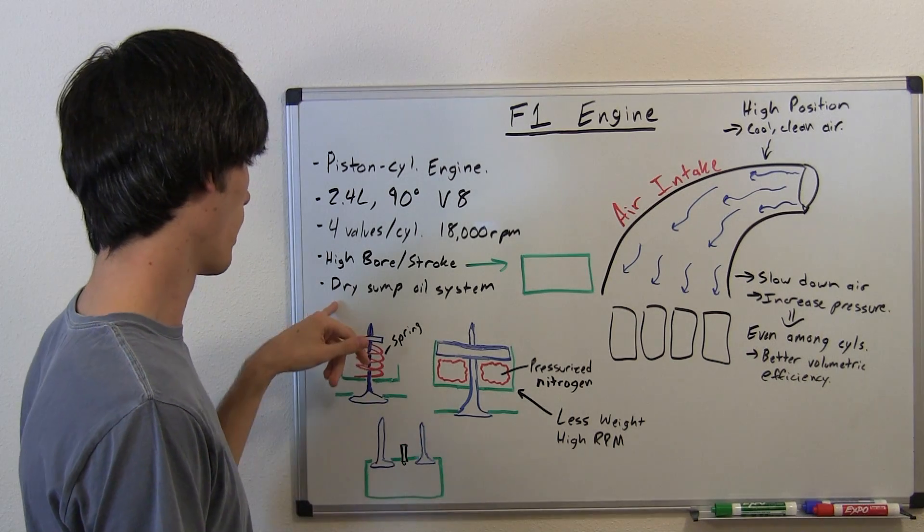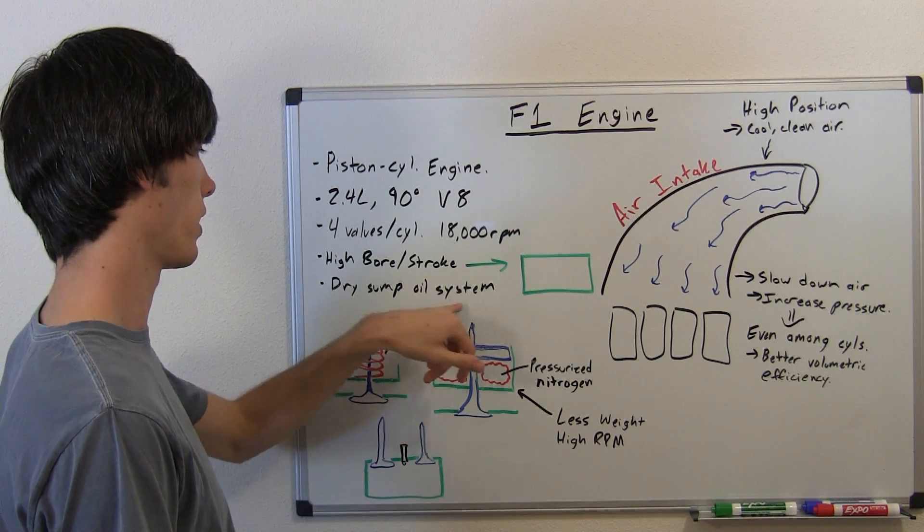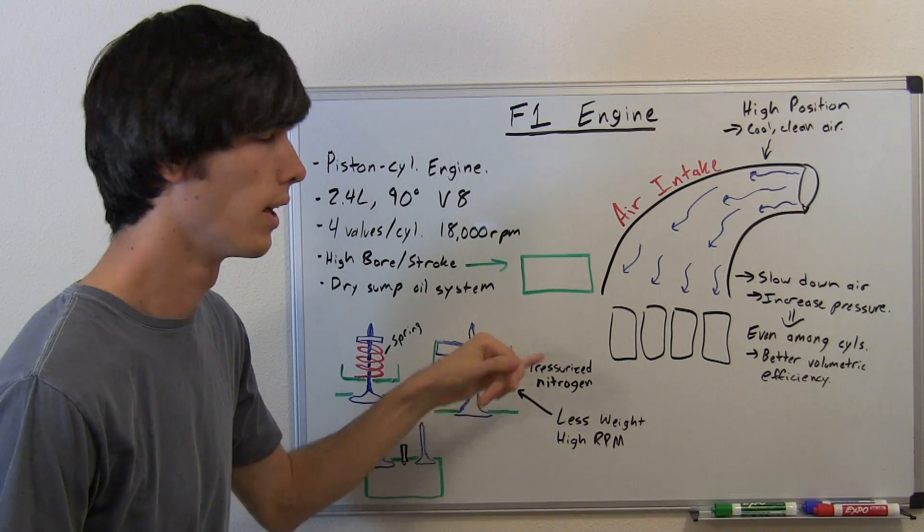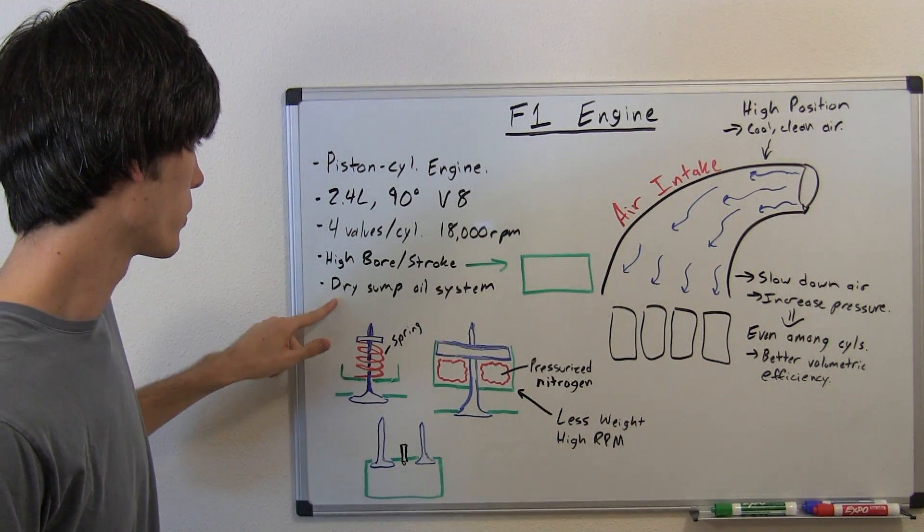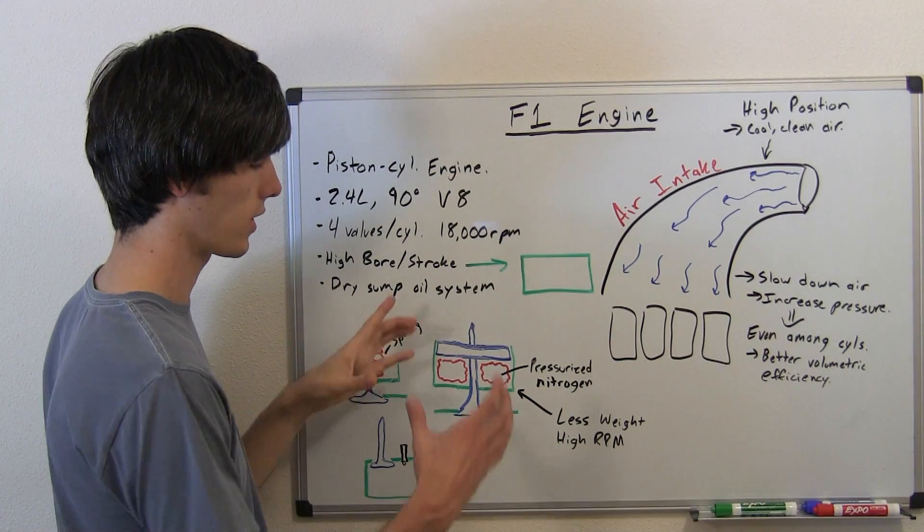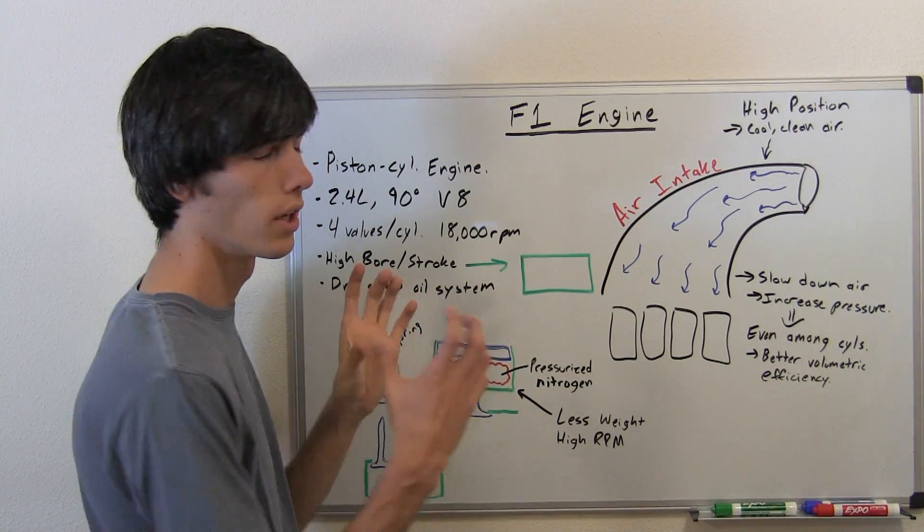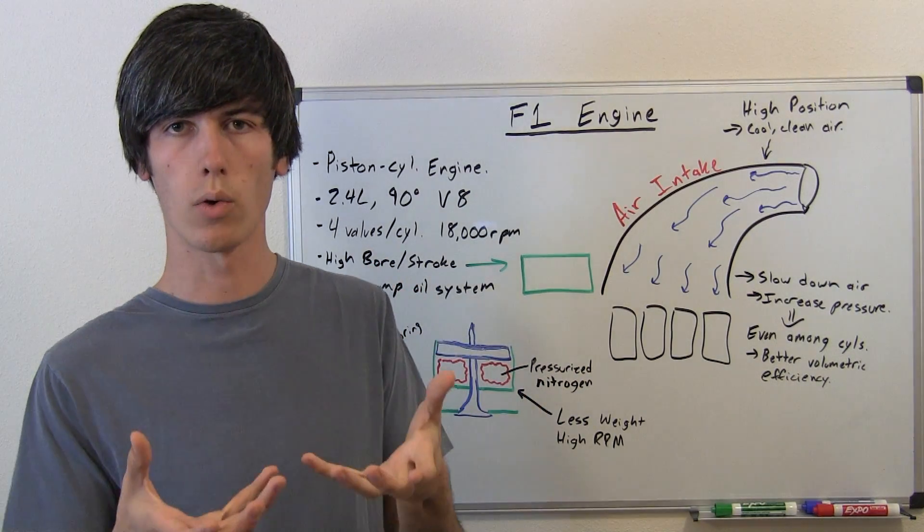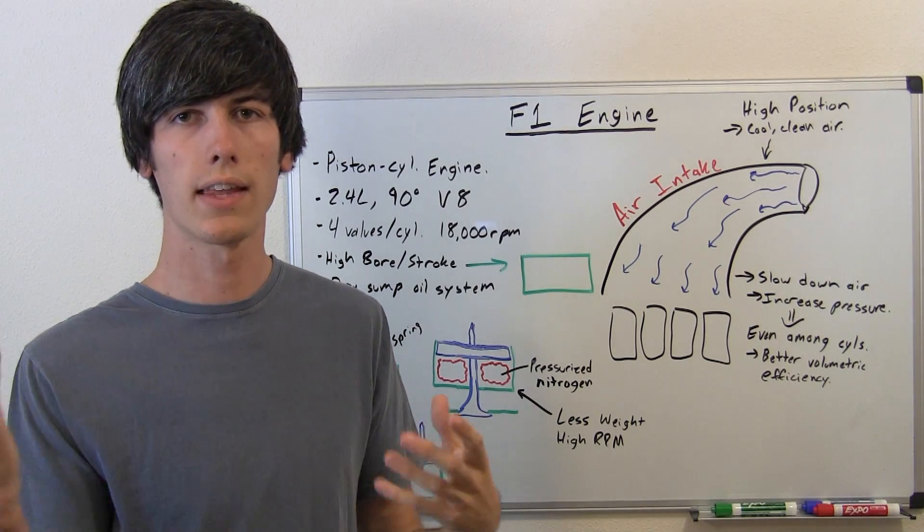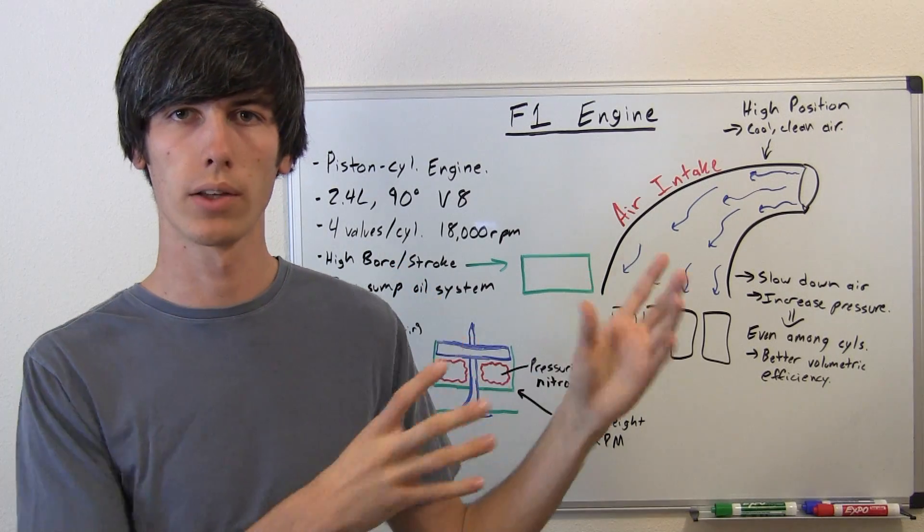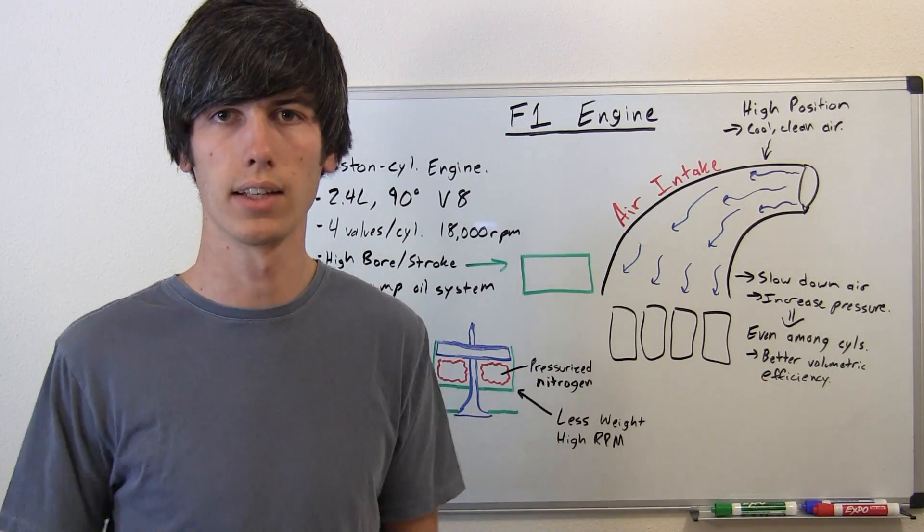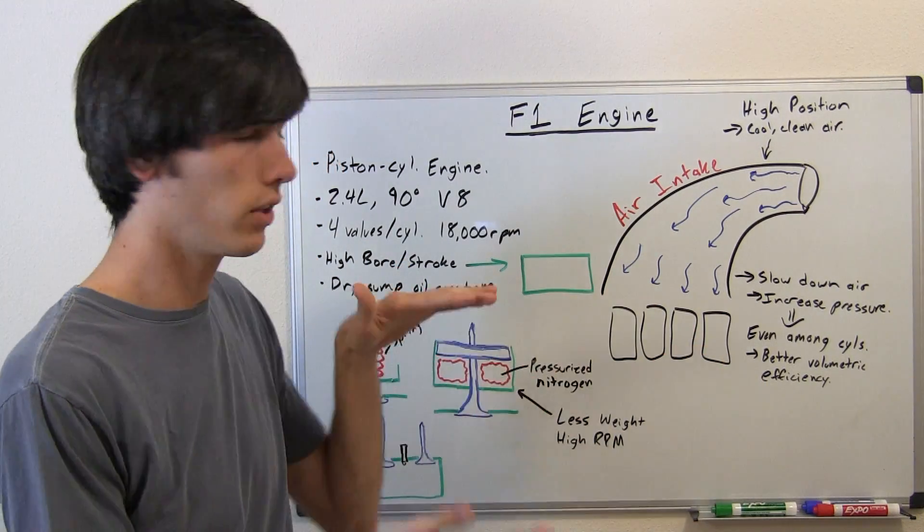And one more thing, it uses a dry sump oil system. Now I haven't gone over this yet and I probably will in a future video, but just know that what that means is it takes that oil sump, which typically is underneath. You've got your oil pan in your car. Well, you take that out and you're allowing yourself to lower your engine and then you put your oil tank anywhere in the vehicle that you want and just have lines leading to the engine.